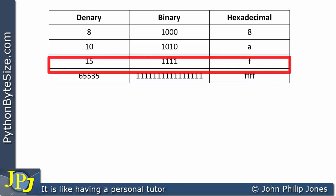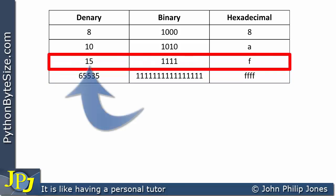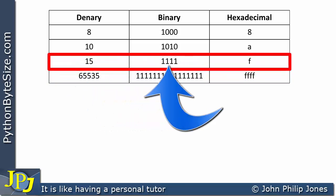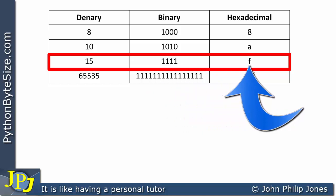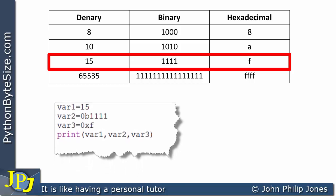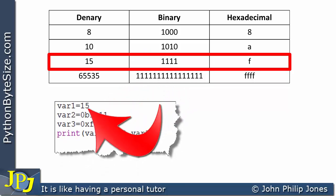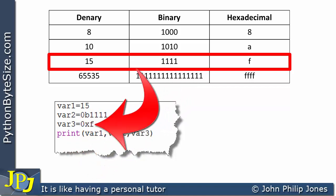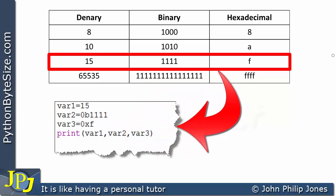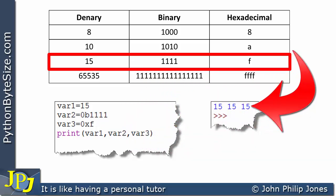Denary 15 is 0b1111 in binary and 0xf in hexadecimal. When printed, all three variables output 15, because Python always outputs in denary regardless of how the value was assigned.